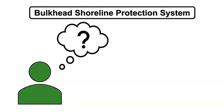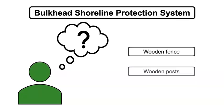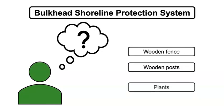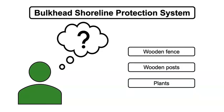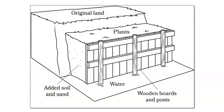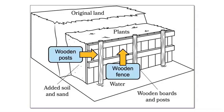In our last lesson, we looked at a bulkhead shoreline protection system. Do you remember what it looked like? Shout out the parts of the system. I remember the system blocks the water with a wooden fence and wooden posts and plants hold the land in place. Do you agree? It's a little hard to remember though. Engineers draw sketches and diagrams during the Imagine stage. Let's look at a diagram of this bulkhead shoreline protection system. What does this diagram show? I see the wooden fence and wooden posts. I also see land behind the fence and plants on top of the land.